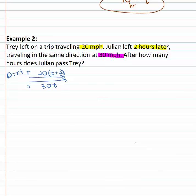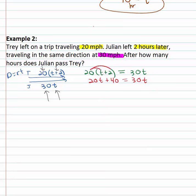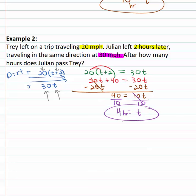If they covered the same distance because they started and stopped at the same place, their distances must be equal. Trey's distance is twenty times (T plus two). Julian's distance is thirty times T. We now have an equation we can solve, which we found by multiplying rate times time for each person. Distribute the twenty, giving us twenty T plus forty equals thirty T. Get the variable on one side by subtracting the twenty T's: forty equals ten T. Finally get T alone by dividing by ten — she is going to pass Trey after four hours.